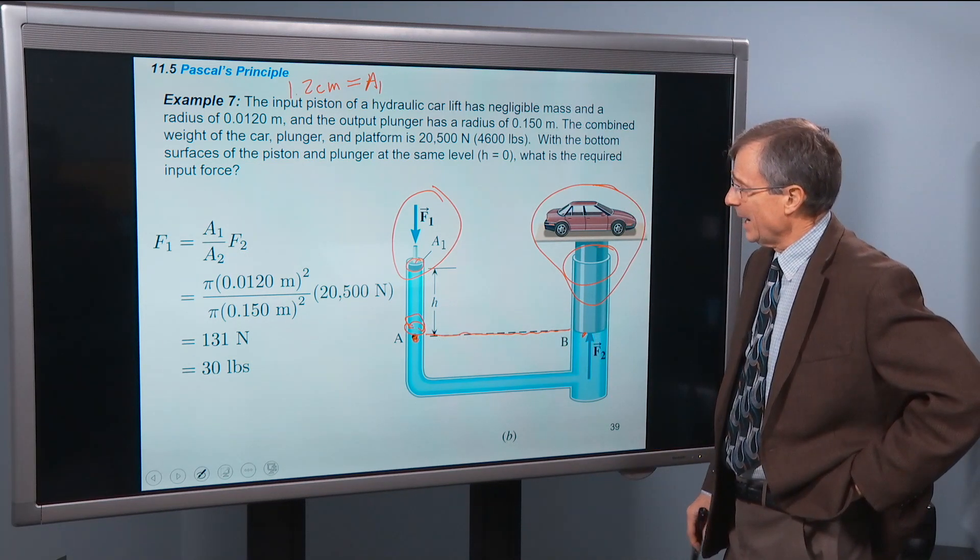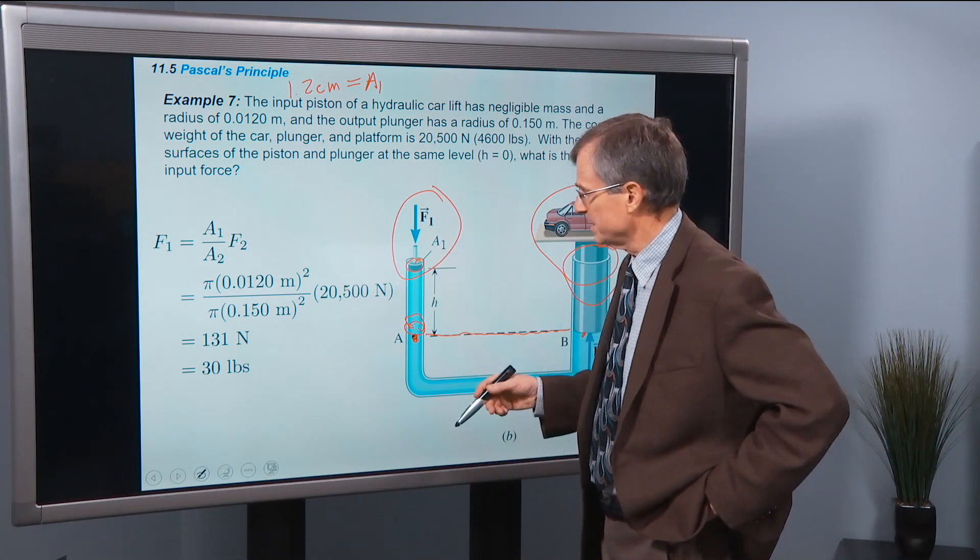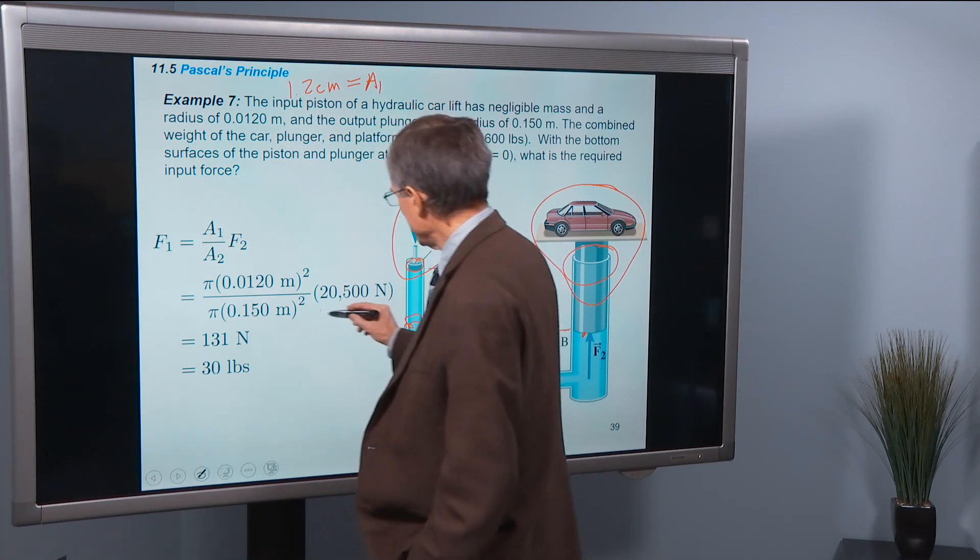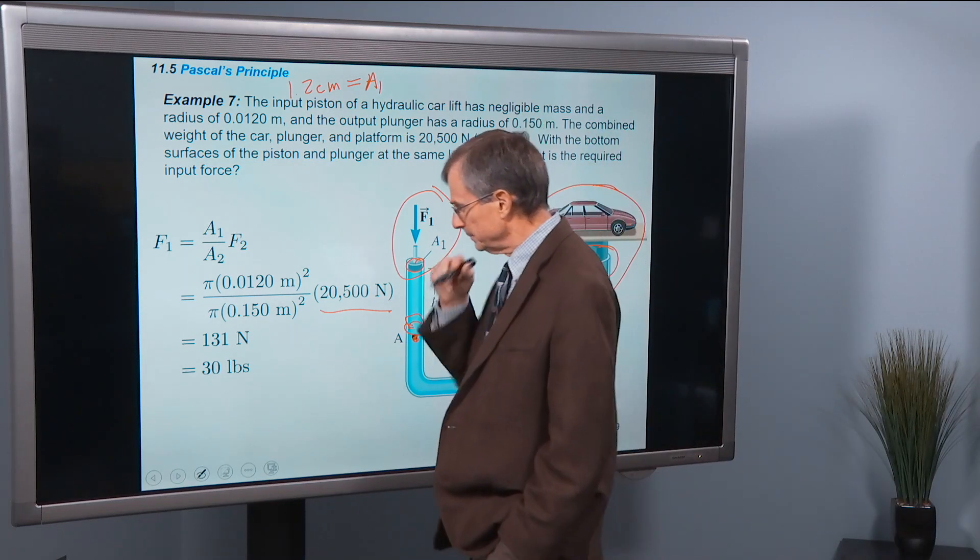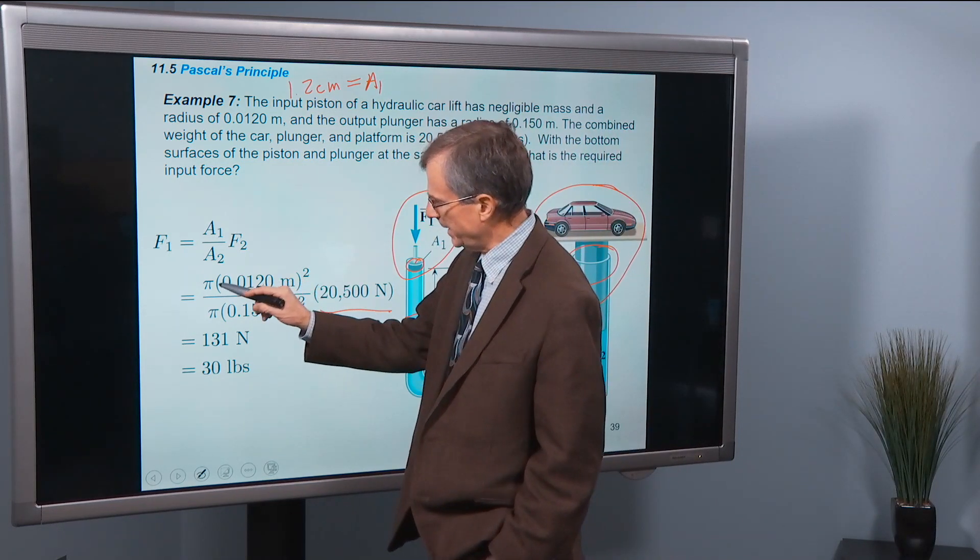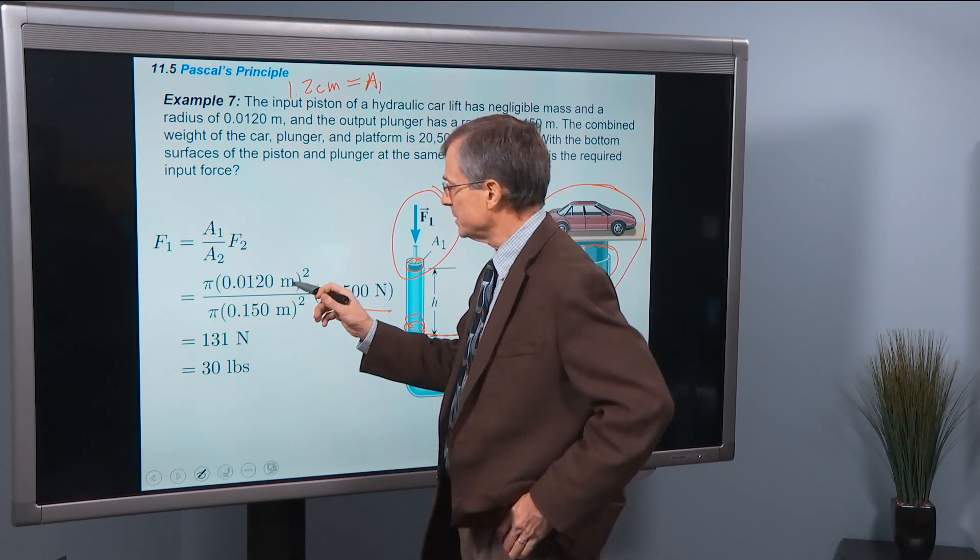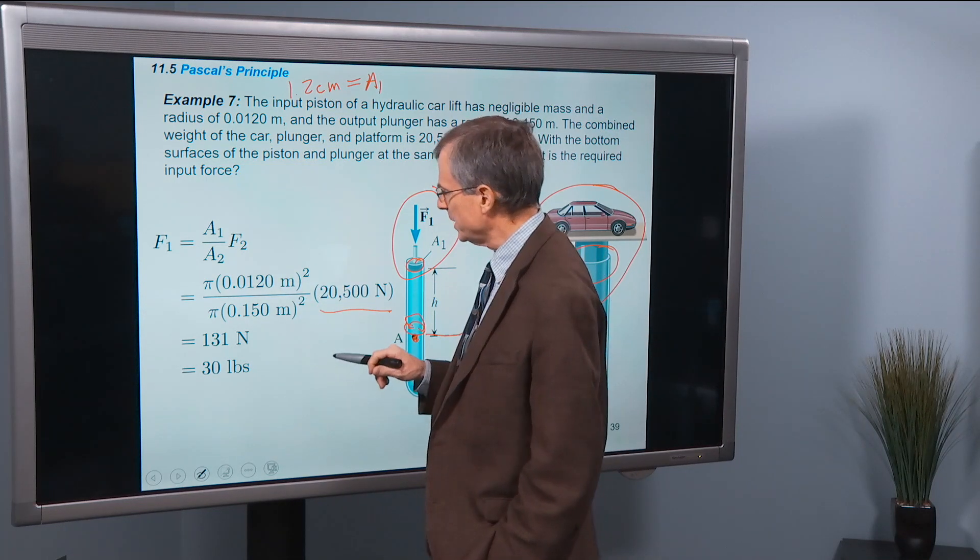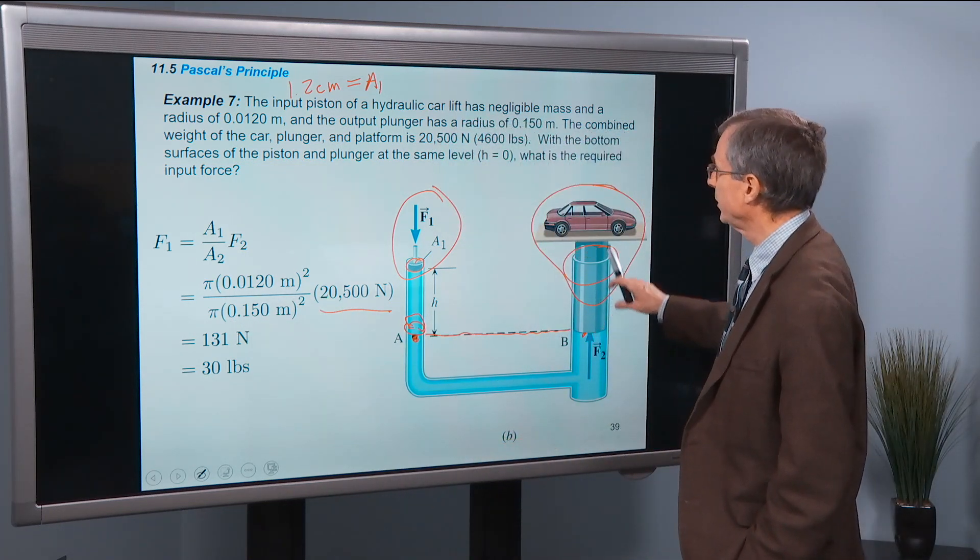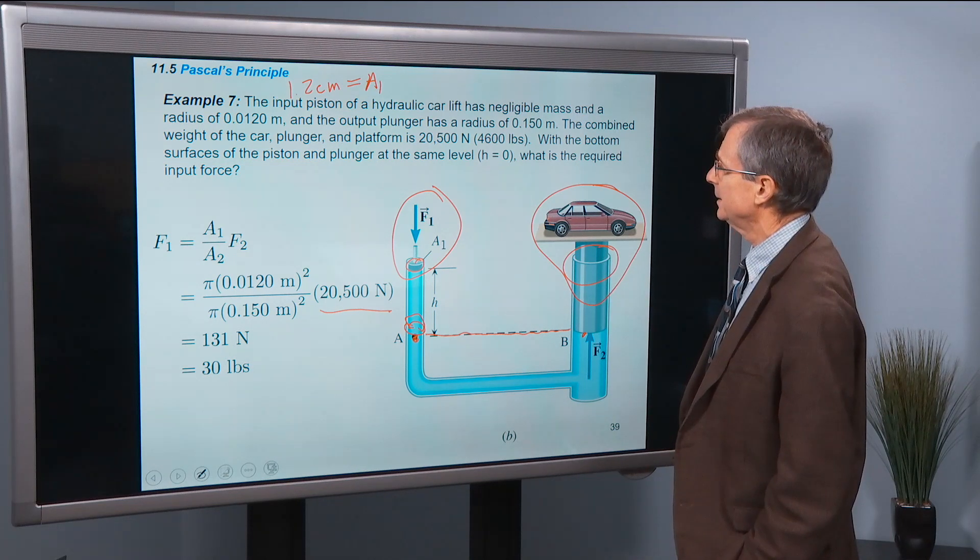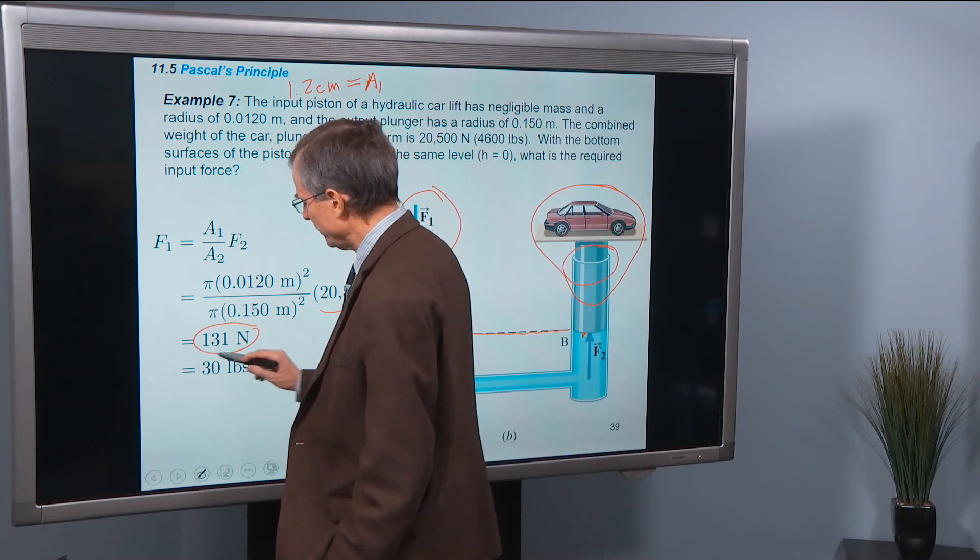So how much force do we have to do at the input piston? Well, here's F2, the force necessary to hold up the plunger and the car. And then the areas are π r², because they're disks. π times the area of the piston, 0.012, π times the area of the plunger.